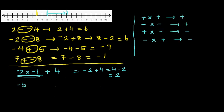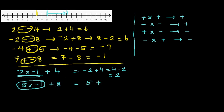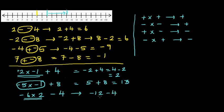What if it is negative five times negative one plus eight? Negative times negative is positive, so that becomes positive five plus eight, which is thirteen. What if it is negative six times two take away four? Negative times positive gives negative twelve, take away four — from negative twelve going four to the left — that is negative sixteen.